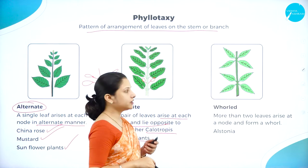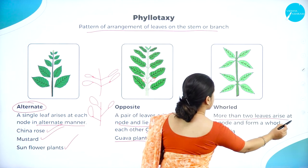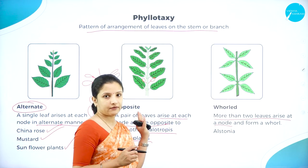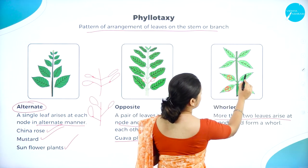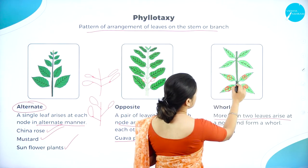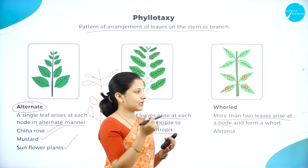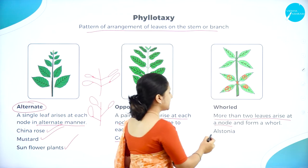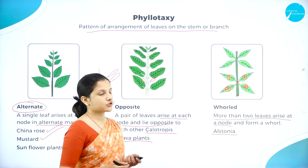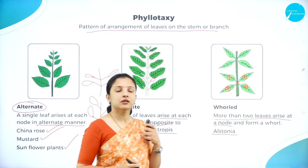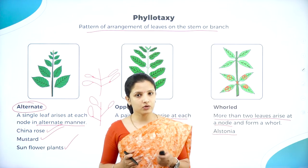Next is whorled leaf arrangement. Whorled means they are arranged spirally. Here more than two leaves arise at a node and they occur in a spiral or whorl-like arrangement. The best example is Alstonia plants. So based on phyllotaxy the leaves are of three types: alternate, opposite and whorled.